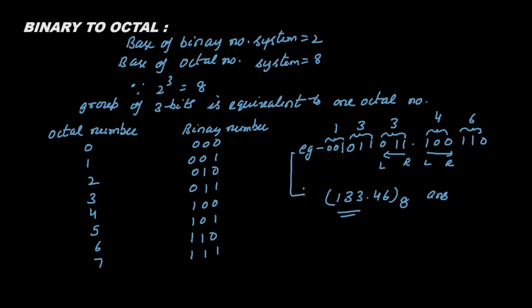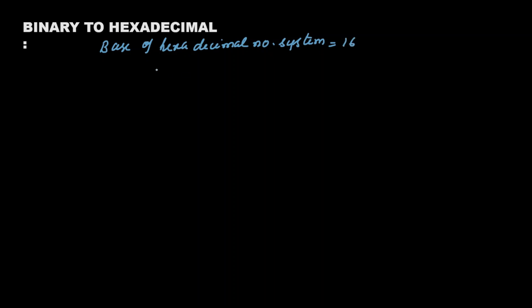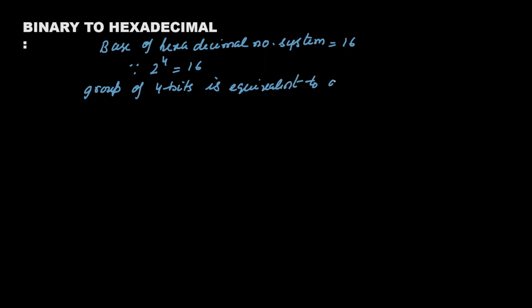Next we consider binary to hexadecimal conversion. The base of the hexadecimal number system is 16, and the base of binary is 2. Since two to the power four equals 16, a group of four bits is equivalent to one hexadecimal digit. We will form groups of four bits.